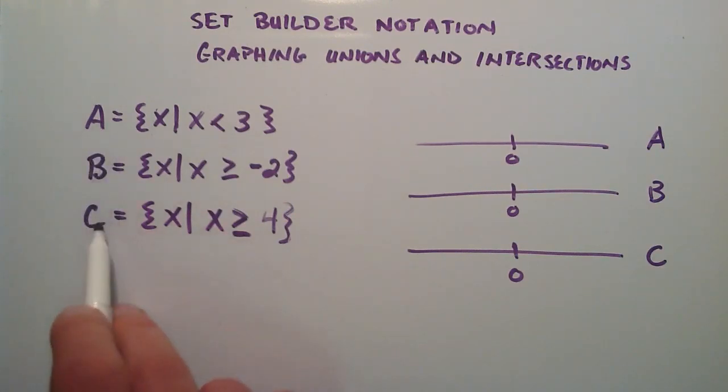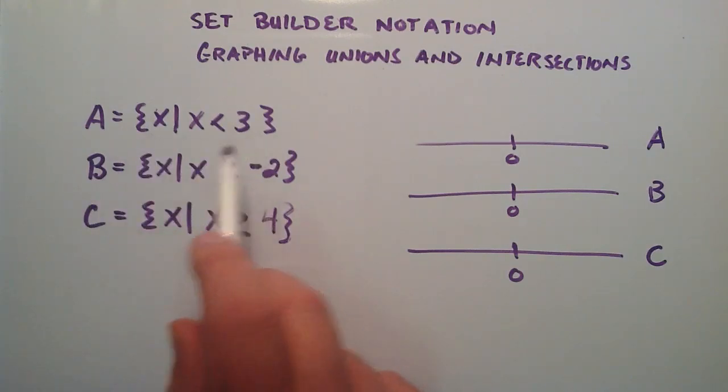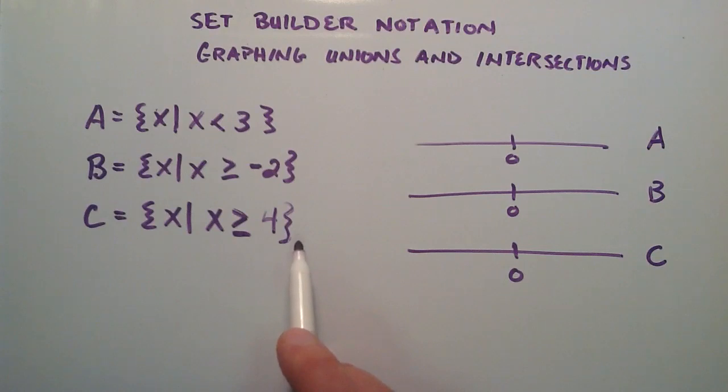So I've defined three sets here, and they're all defined using set builder notation. The first thing I want to do is graph each of these sets on their own number line.